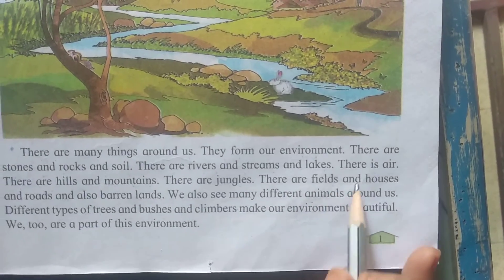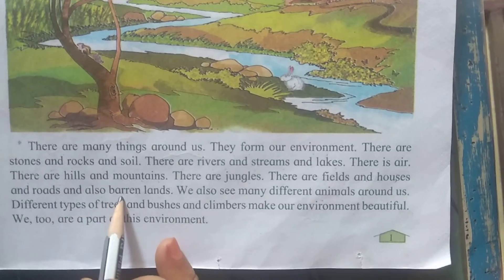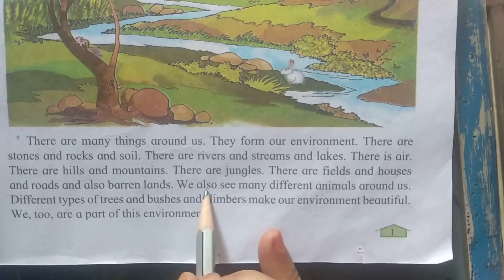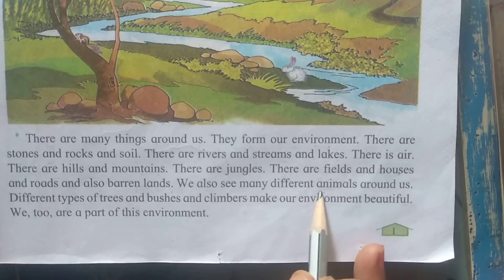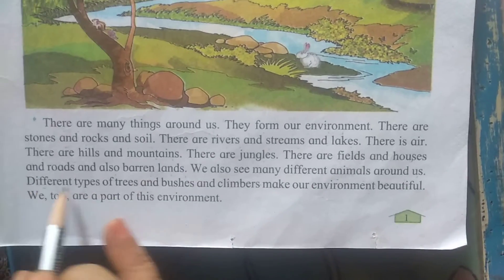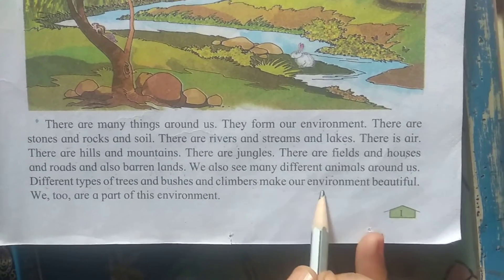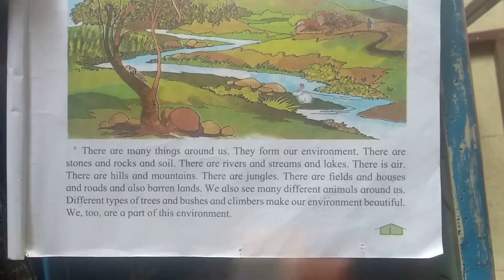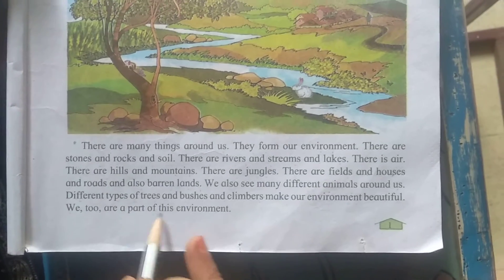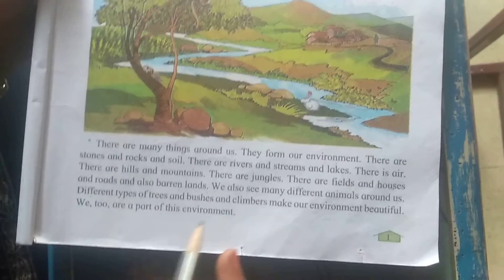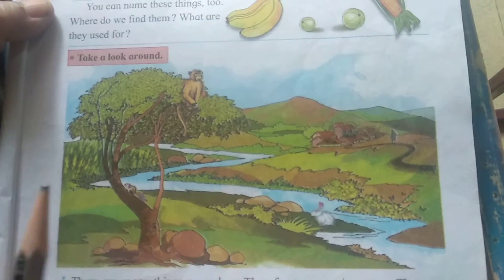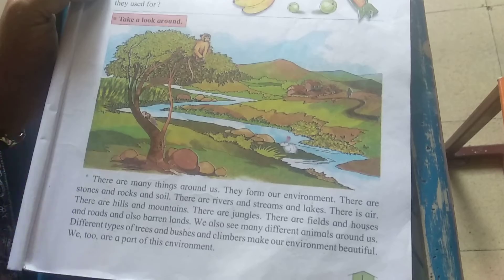There are fields and houses and roads and also barren lands. We also see many different animals around us. Different types of trees, bushes, and climbers make our environment beautiful. We too are a part of this environment. You can see everything in this picture and in our surroundings also. Everything around us is called our environment.